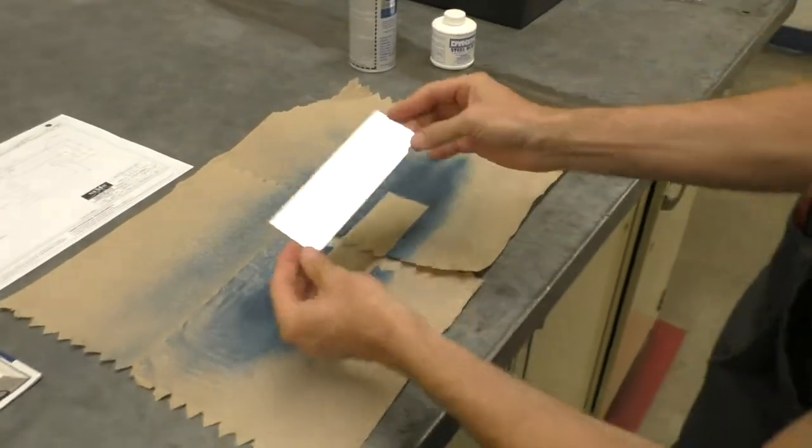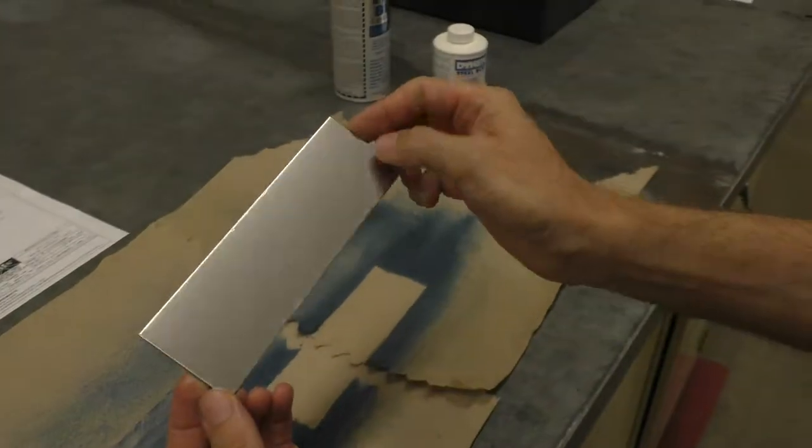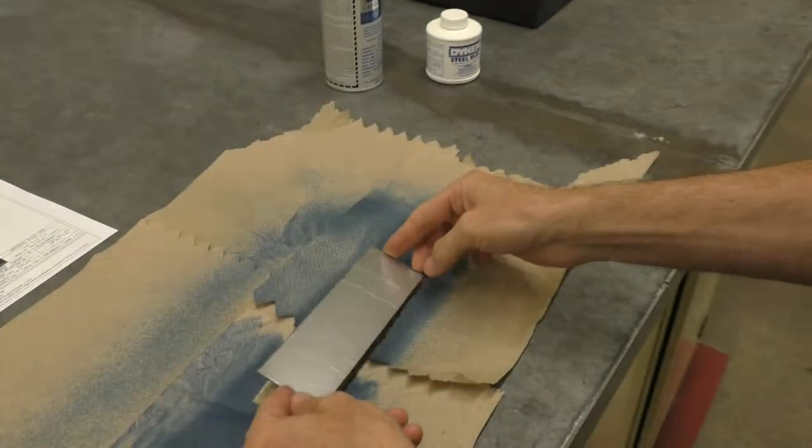So here's the metal, nice and clean. There's no oil on there whatsoever, and now it's time to apply some layout dye.